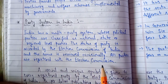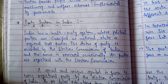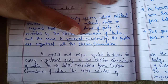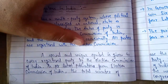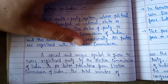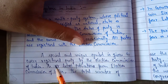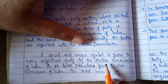All parties in India — whether national, state, or regional — have to be registered with the Election Commission. A special and unique symbol is given to every registered party by the Election Commission. Parties do not have a choice to pick any symbol; it is assigned to them by the Election Commission of India.